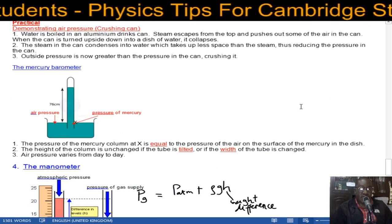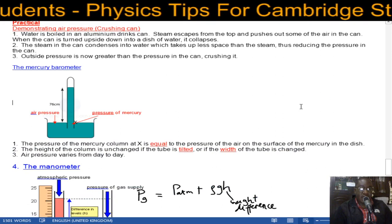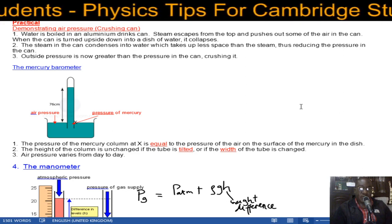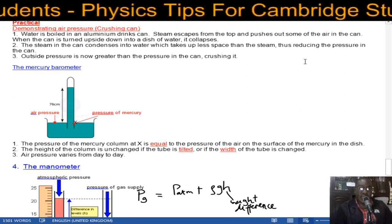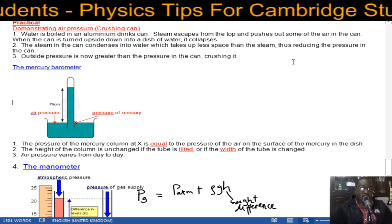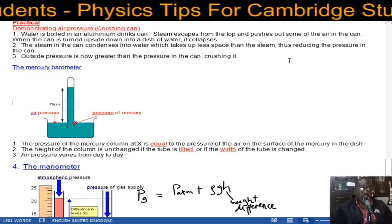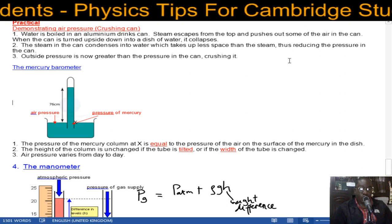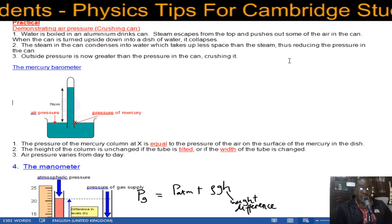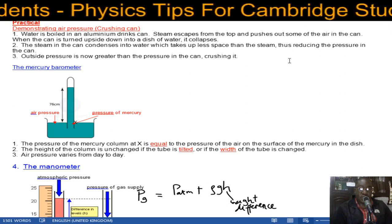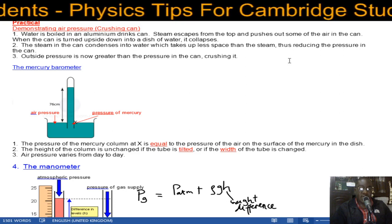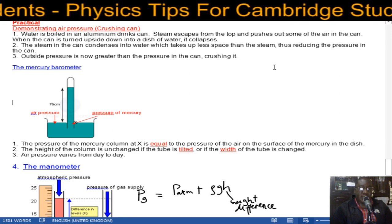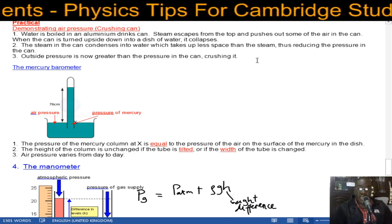So what you do is take an aluminum drinks can and boil water in it. The steam escapes from the top and pushes out some of the air in the can. When the can is turned upside down into a dish of water it collapses. The steam in the can condenses into water which takes up less space than the steam, thus reducing the pressure in the can. Outside pressure is now greater than the pressure inside, therefore the can crushes.